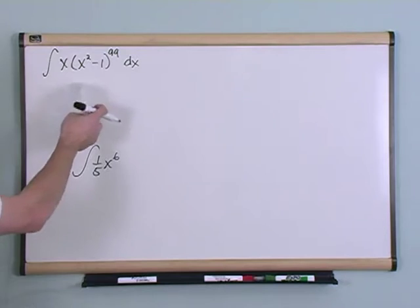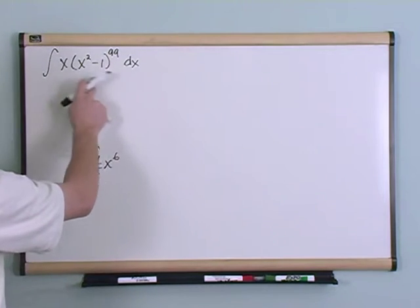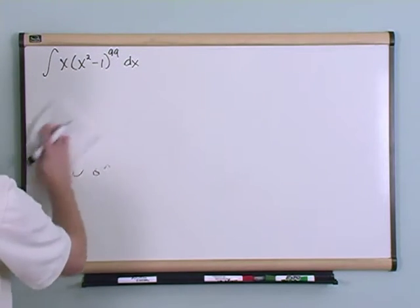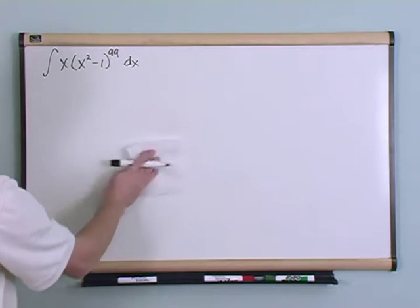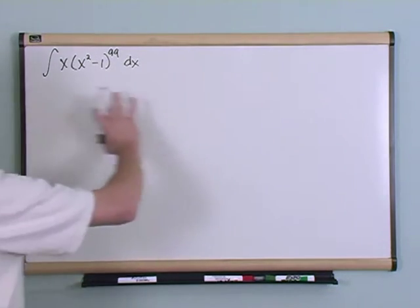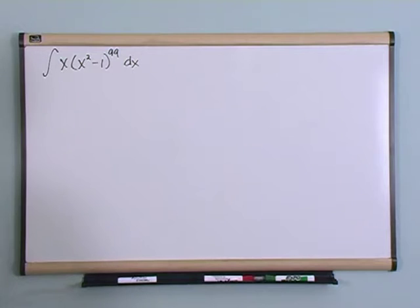But this is different and you really can't even expand this because something raised to the 99th power, you're going to have 99 different terms in there and it's going to become a mess. So you technically could do that but it would just take you forever. So how do you tackle this one?